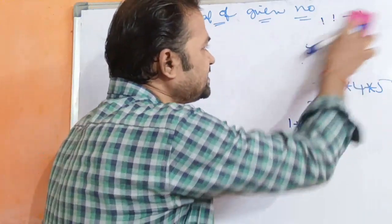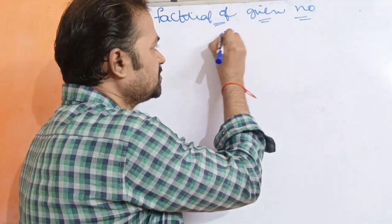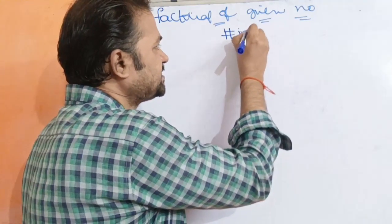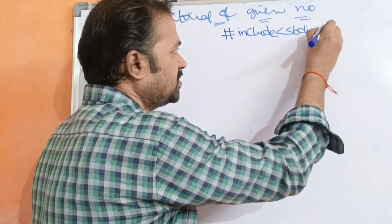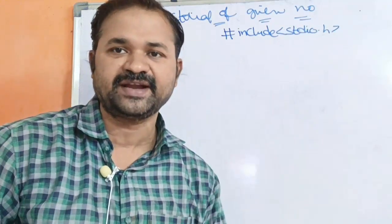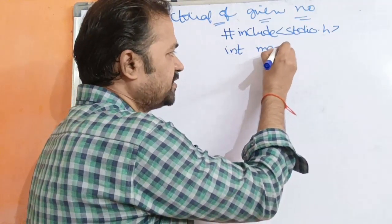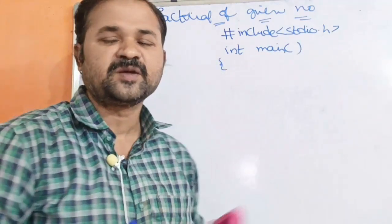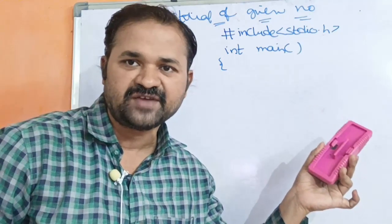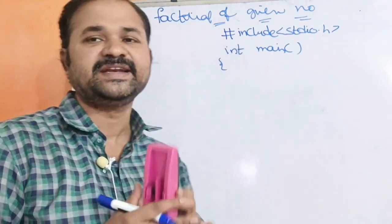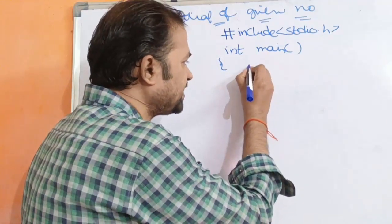Ippo manu program raayali. So first manu stdio.h ni include cheyali - hash include stdio.h - because manu program lo printf and scanf functions use chesthamu, aa functions stdio header file lo untayi. Next main function include cheyali - int main - return type integer because program successful ga compile and execute ayithe main function 0 anta value return chesthundi. Variables declare cheyali.